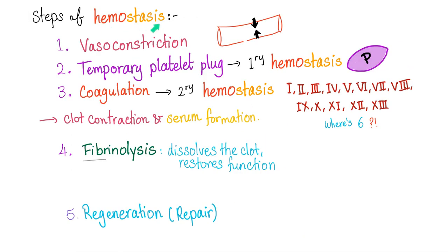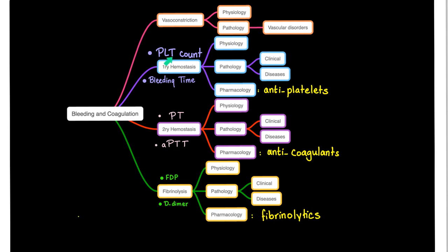What is hemostasis — to stop bleeding? We have primary hemostasis and secondary hemostasis. Today's topic is about secondary hemostasis, also known as coagulation, also known as the clotting cascade. How do we measure primary hemostasis? Platelet count and bleeding time. How about secondary hemostasis? Mainly we have PT and PTT, and others including TT, or thrombin time, and today's topic: ACT, activated coagulation time.